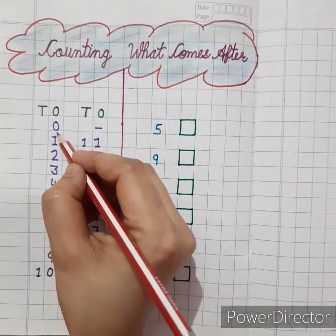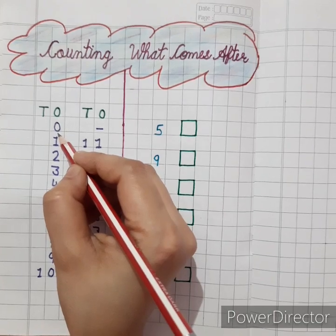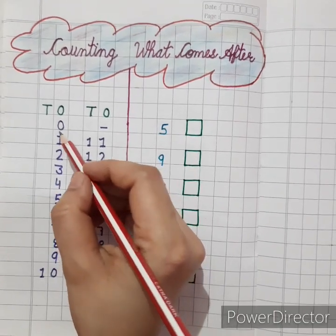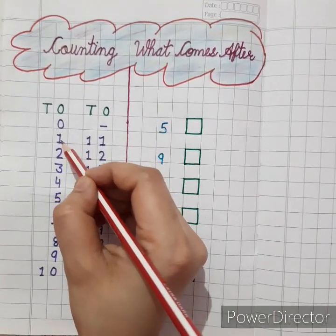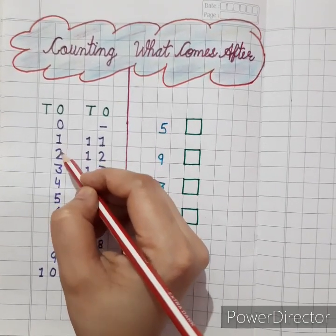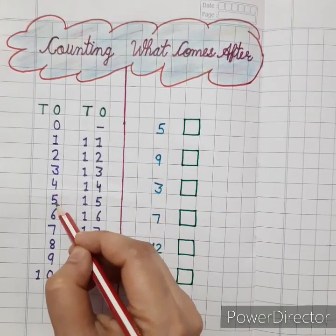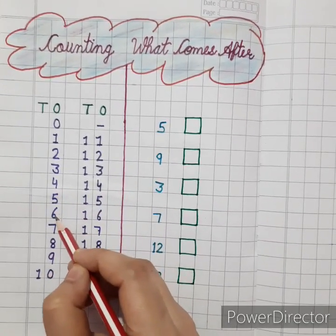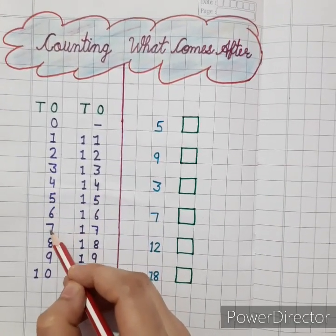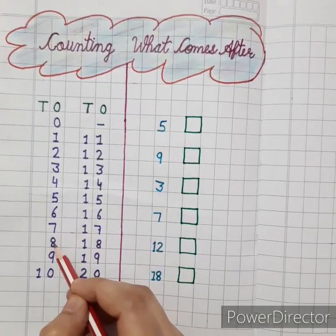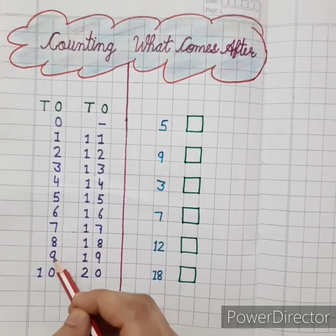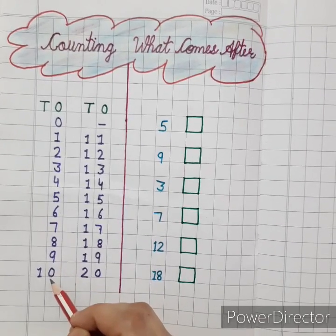So let's start. 0, 1, 2, 3, 4, 5, 6, 7, 8, 9, 10.